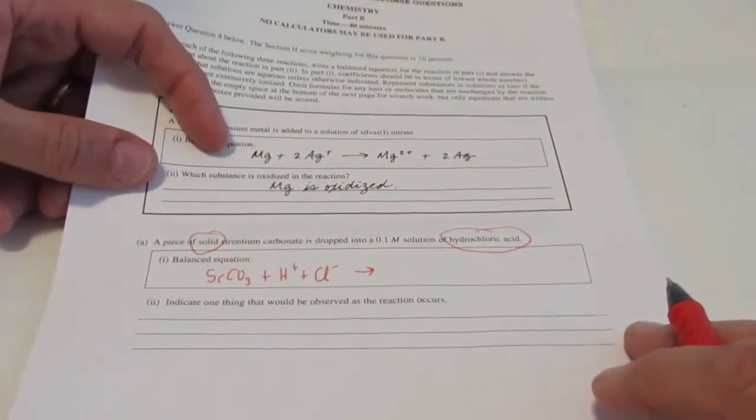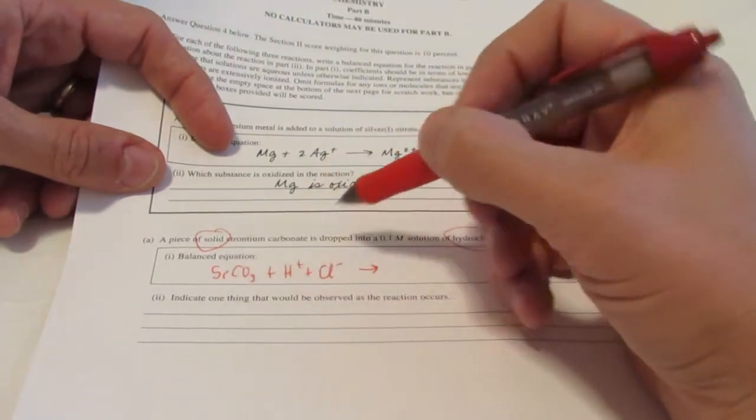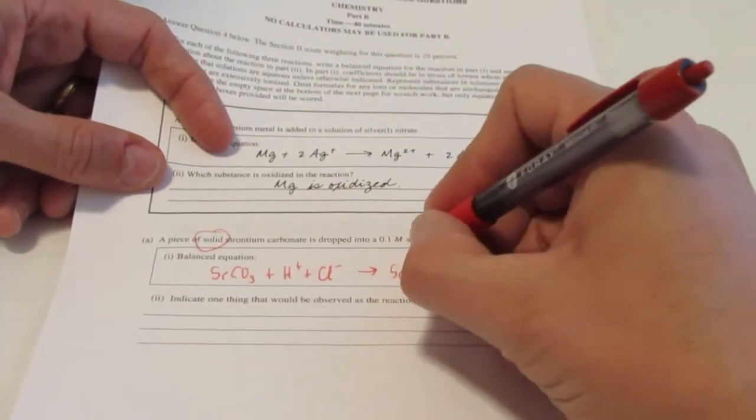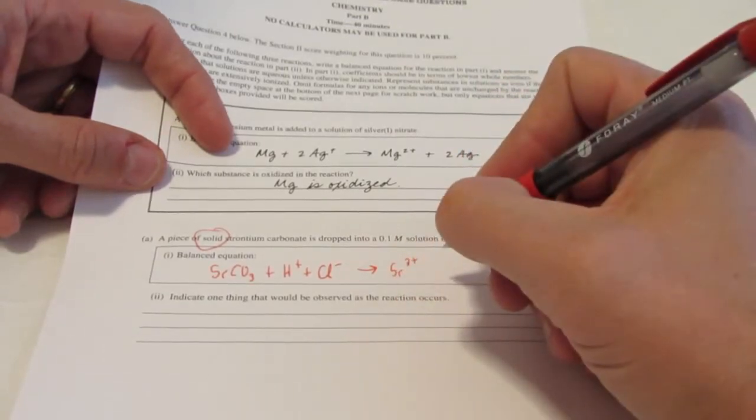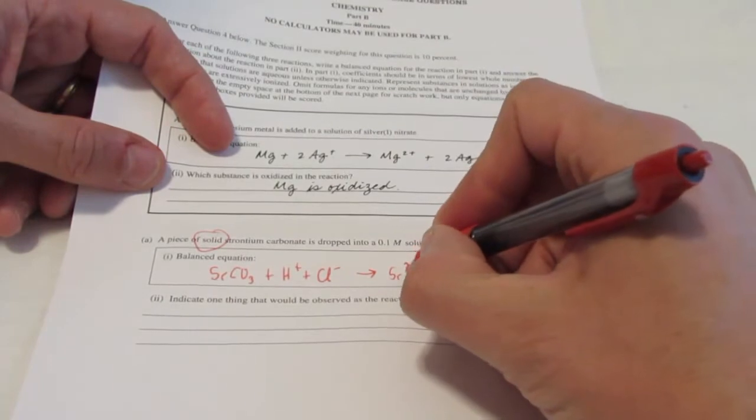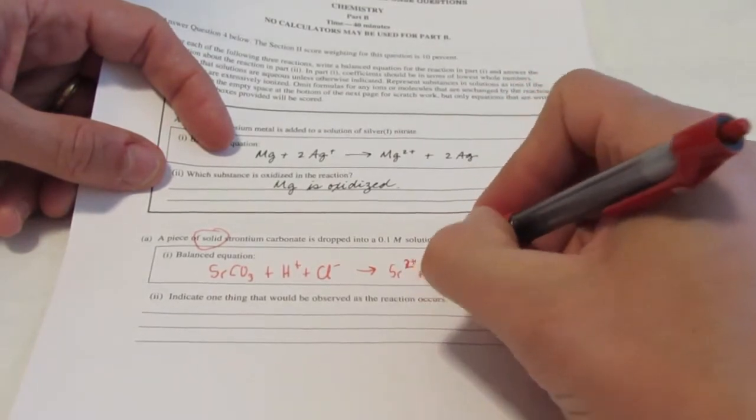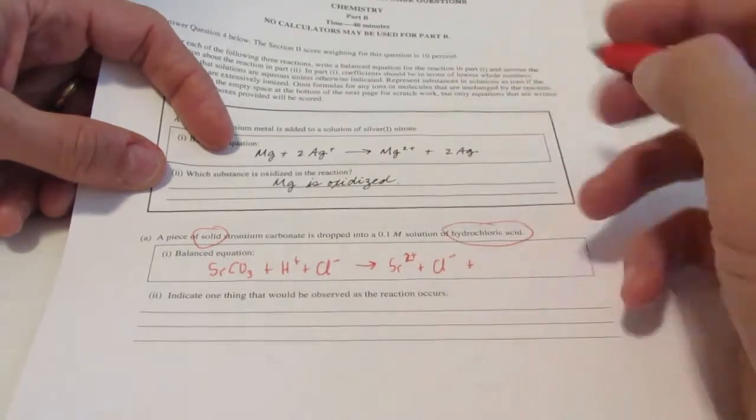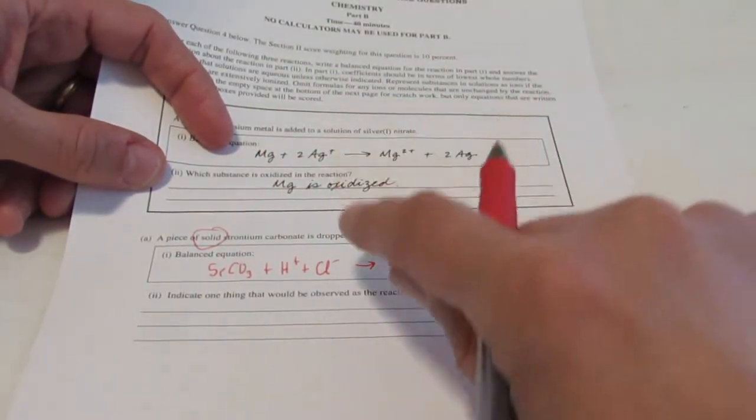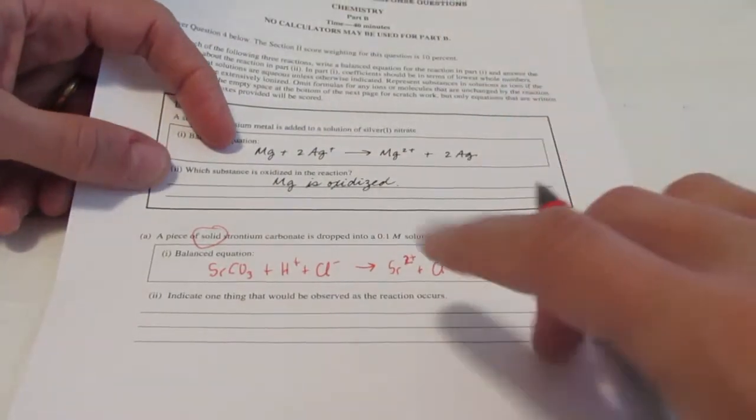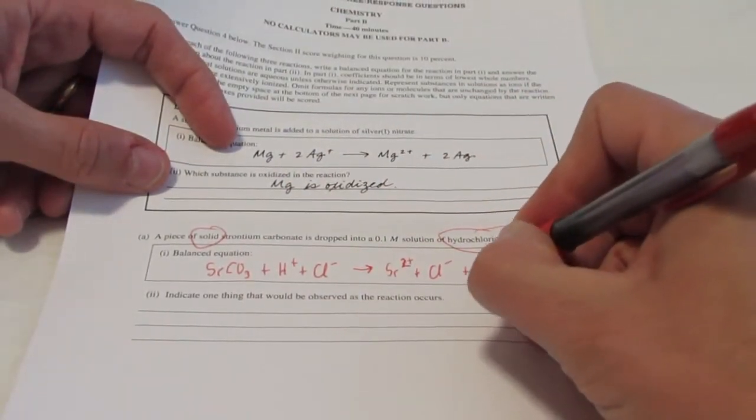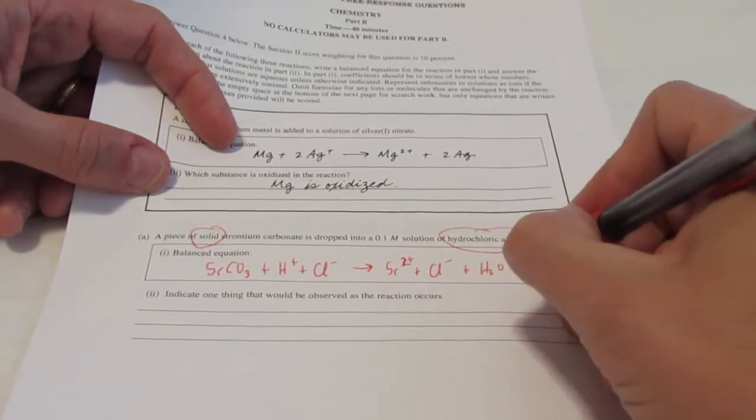It's a cute little double replacement reaction. The strontium and the hydrogen are going to switch places. So strontium and chloride, that's soluble. Remember, all chlorides are soluble except for silver, mercury, and lead. So strontium and chloride will be dissociated. And H+ will hop together with CO3 2-, but not so fast. Remember, H+ and CO3 2- do not form H2CO3 in this case. It forms H2O and CO2.